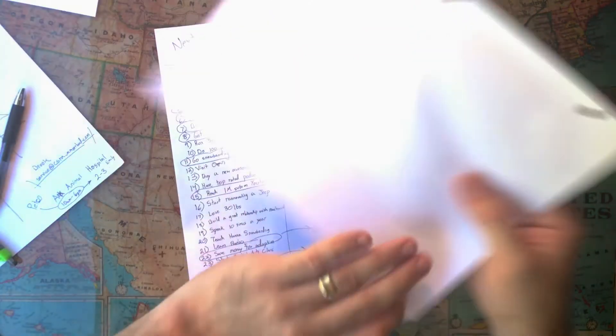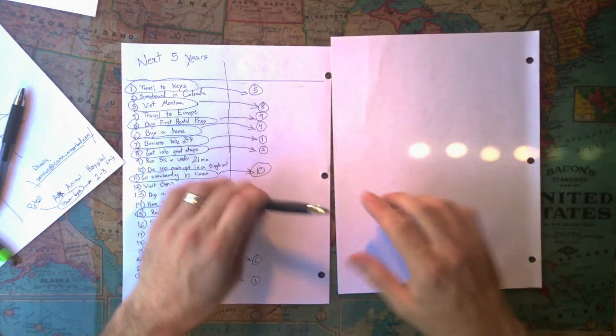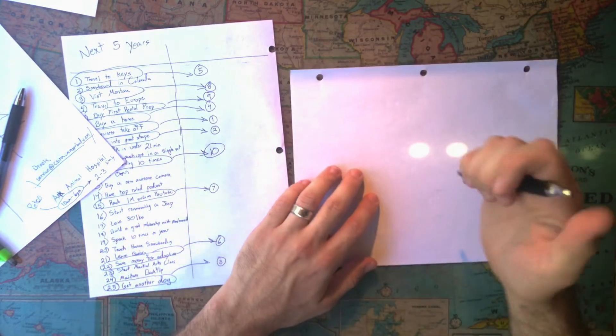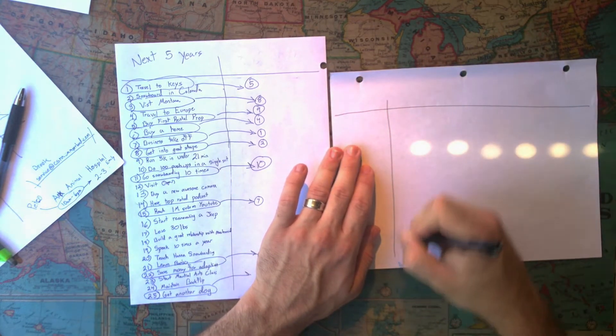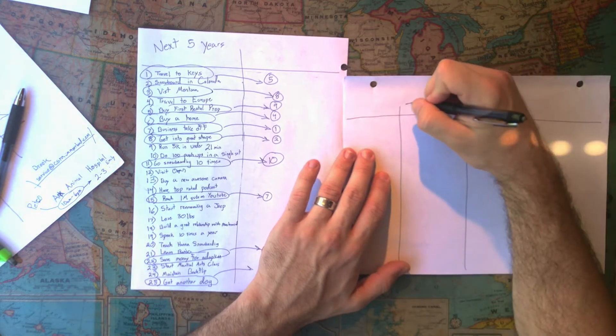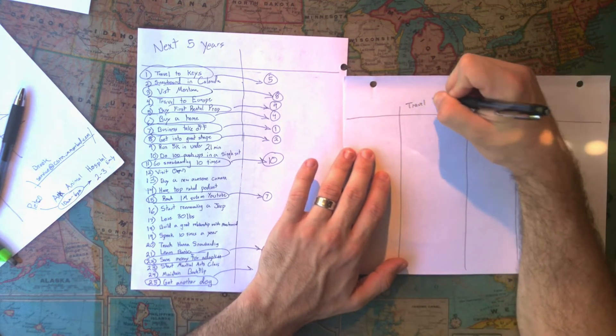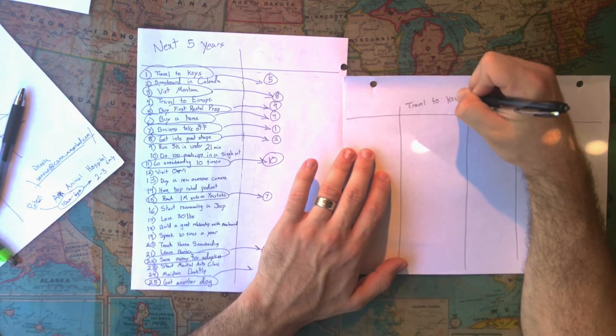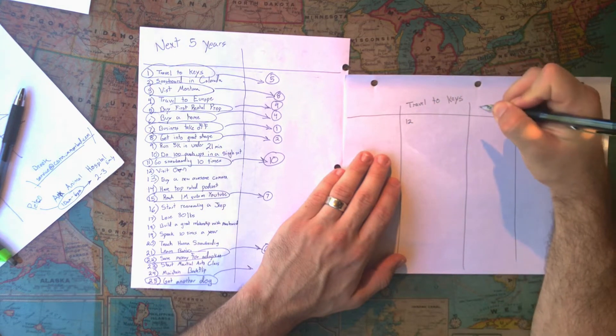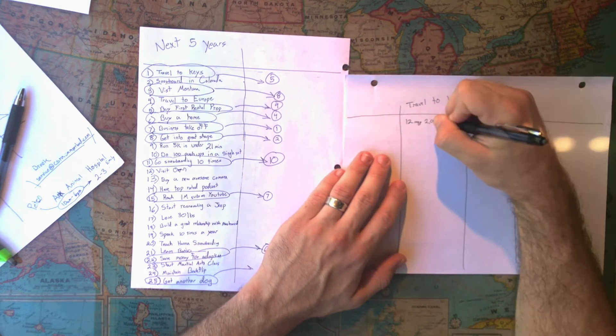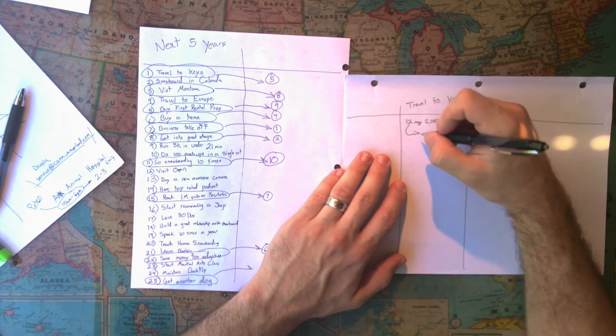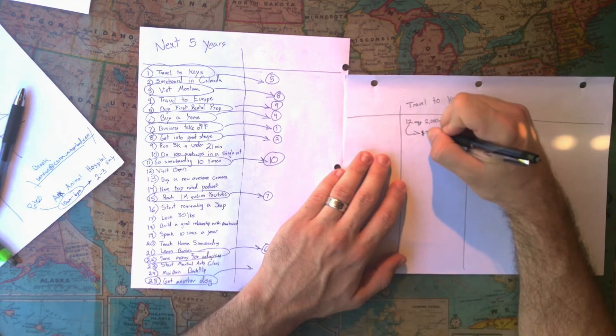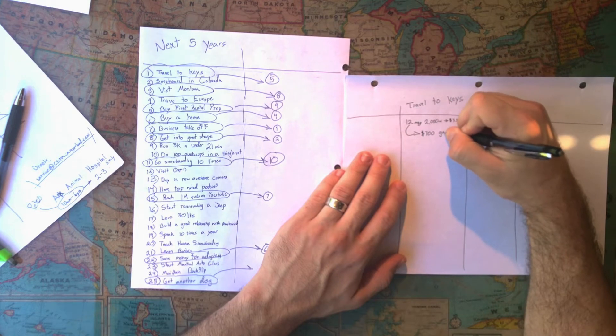Get out a second sheet of paper and this time what I want you to do is take just one of those things and you're going to estimate how much time and money you need to actually do whatever this thing is. Let's say that I want to do travel to the Keys. So now I need to estimate how much money that's going to cost me. I know that it's going to be roughly 2,000 miles and I'm going to estimate that it's going to be $3.50 a gallon. So gas is $700.